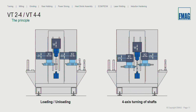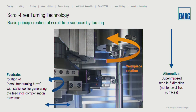The principle of loading and unloading in one flow: both turrets have one gripper and eleven tool spaces. The right gripper takes the finished part and puts it out of the machine to the right automation. At the same time, the left turret takes the raw part and puts it into the main spindle clamping. With these two turrets, you can use them for full four-axis machining. For the scroll free turning process, the feed rate is generated by the rotation of the special scroll free turning turret using a static tool.